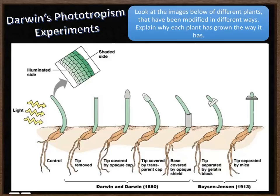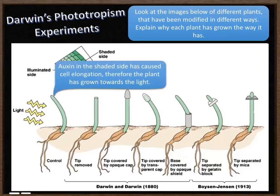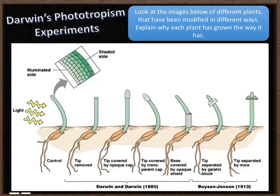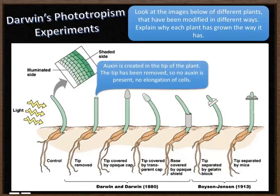Okay, so we're going to look at each of these plants in turn and see why they've grown the way they have. This first plant has auxin on the shaded side because on the light side it's been destroyed. Therefore the cells on the dark side have elongated — that's why the plant has grown towards the sun. The second one has had the tip removed. Auxin is created in the tip of the plant, so because the tip has been removed, no auxin is present and there's been no elongation of cells, or very little.